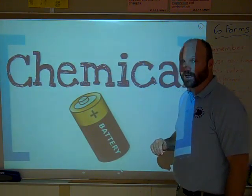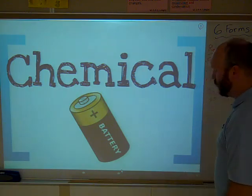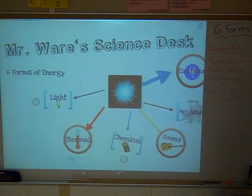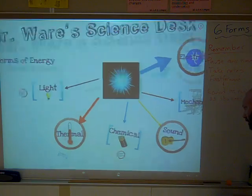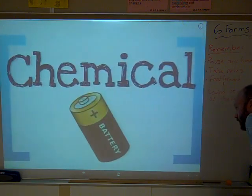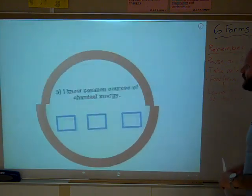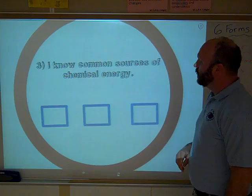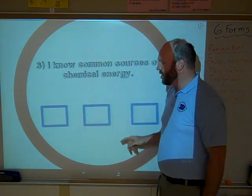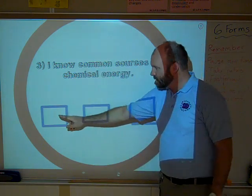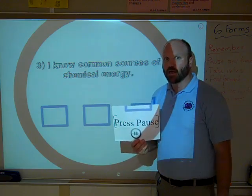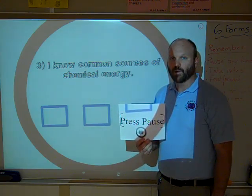Get your notebooks and pencils ready to copy down your learning goal. The learning goal today: I know common sources of chemical energy. Write that down — number three, give me your three boxes, put a scale score inside your first box. Pause now to copy that down. When you're ready, go ahead and press play.